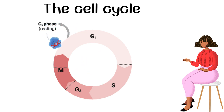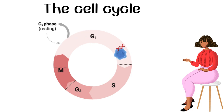When the cell enters the G1 phase, it grows in size. It carries out its normal functions and prepares for DNA replication. The S phase, also known as the synthesis phase, is when DNA replication occurs. The cell duplicates its genetic material to ensure that both daughter cells receive an identical copy of the genome.